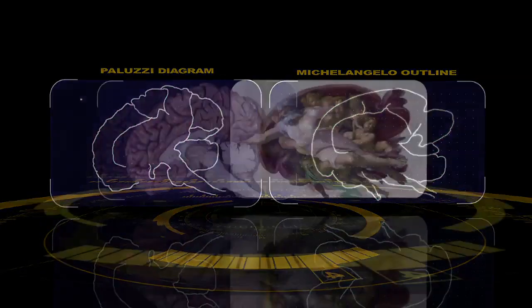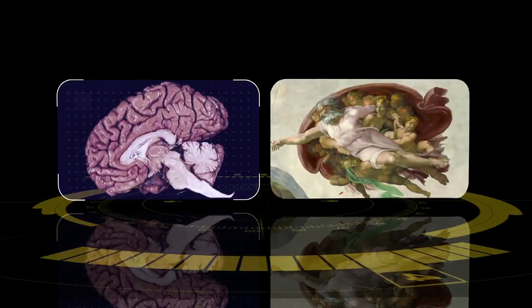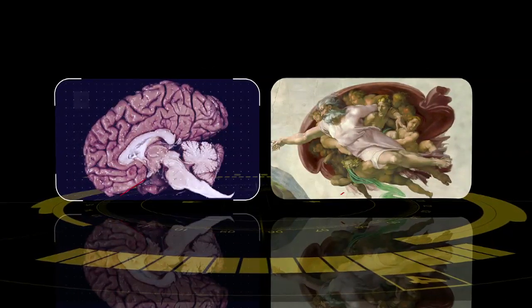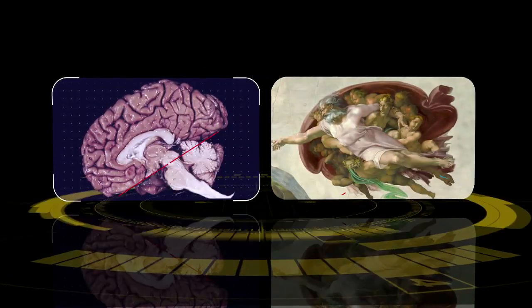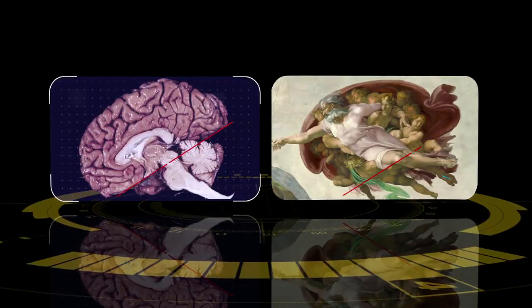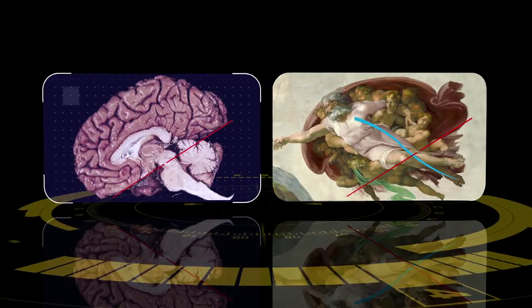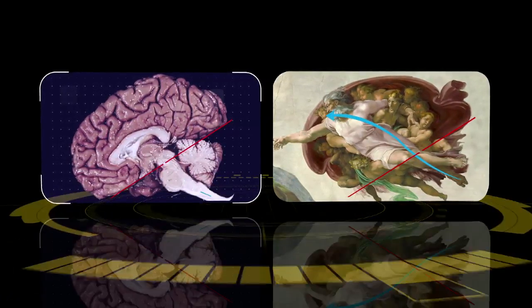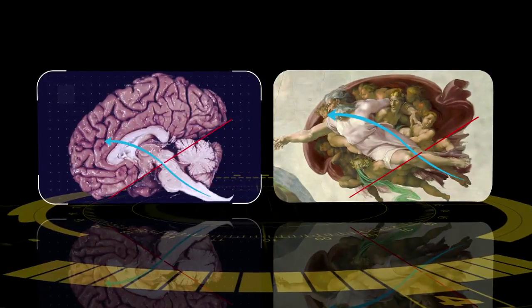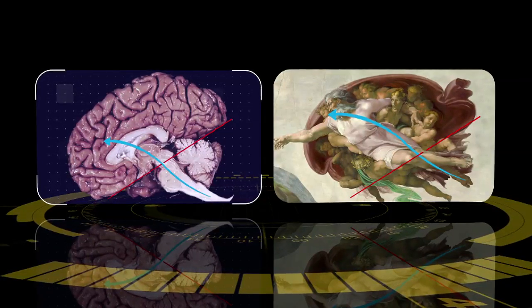The first correspondence we see is from the main axes. In this comparison, the plane of the cerebrum is indicated in the composition. In relationship to this is the axis or sweep of the God figure, a match with the sweep and angle of the corpus callosum and the brain stem.